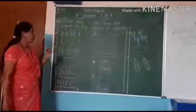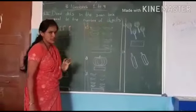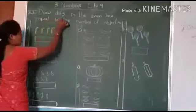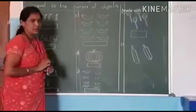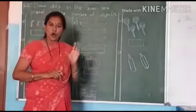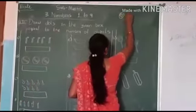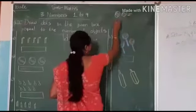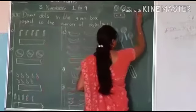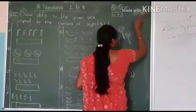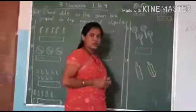See children, this is question number one. Draw a box in the given box equal to the number of objects. See here children, how many objects are raised? Let's see — we have to draw. For example, here two objects are raised, we should put here two dots. If three objects are raised, we should draw here three dots — one, two, three. Did you understand children? Okay.